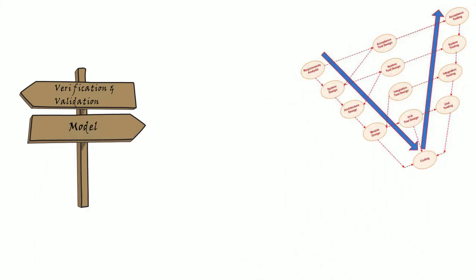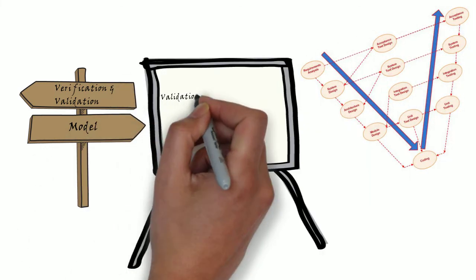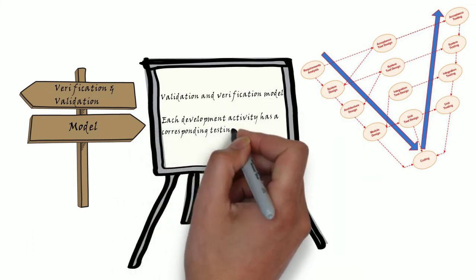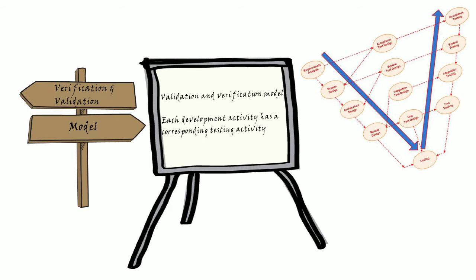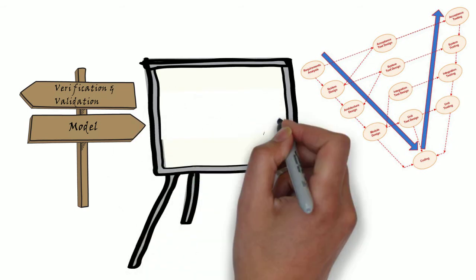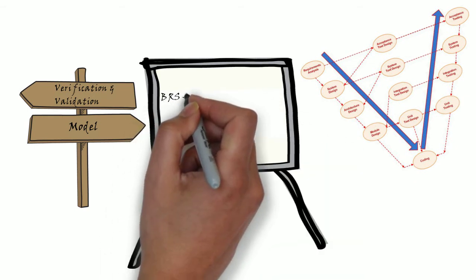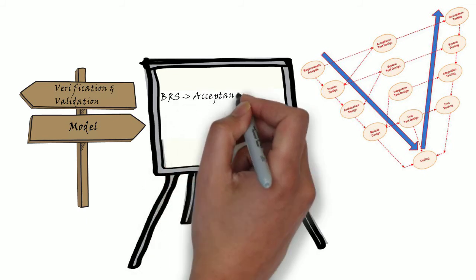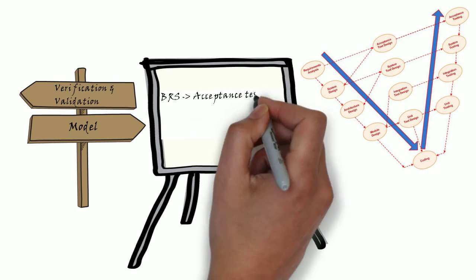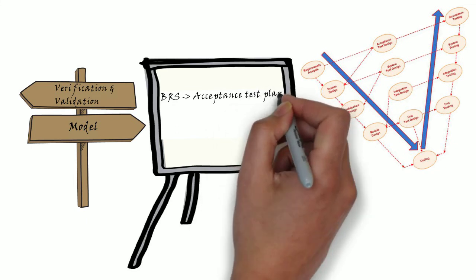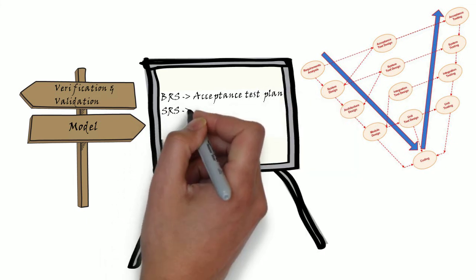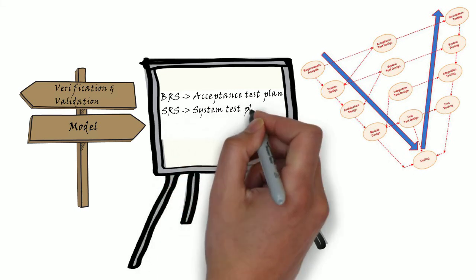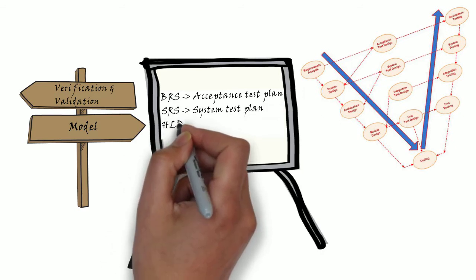Since testing is towards the last stage and there are no activities happening in the initial stages, another model came into picture which is V model. As its name indicates, V model is verification and validation model. Here each development activity has a corresponding testing activity. When business requirement specification document is prepared from development side, acceptance test plan and test cases for acceptance testing will be prepared from testing side. Similarly, when SRS or system requirement specification documentation is prepared from development side, system test plan and test cases for system testing would be prepared from testing side.